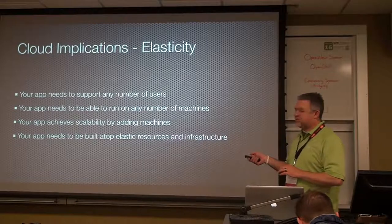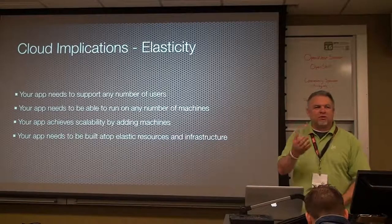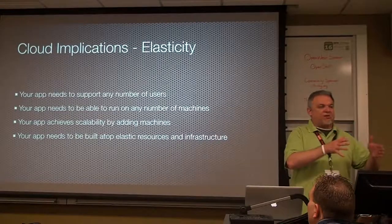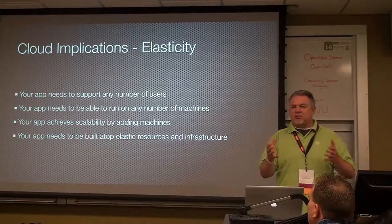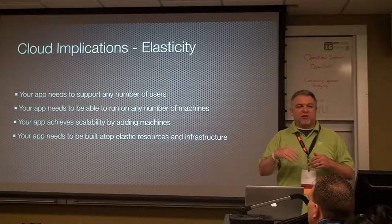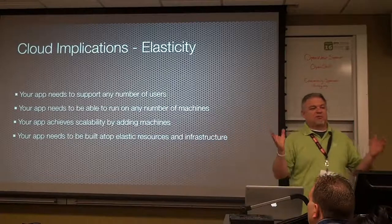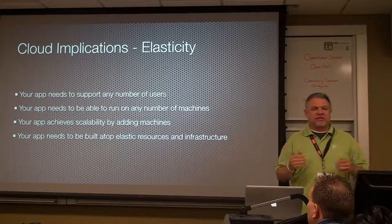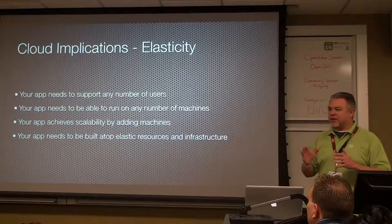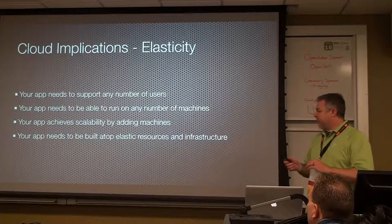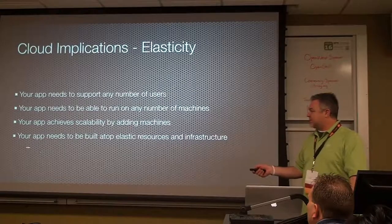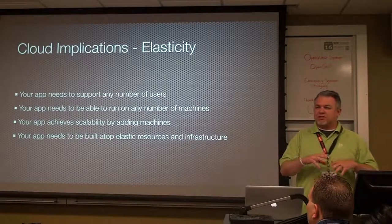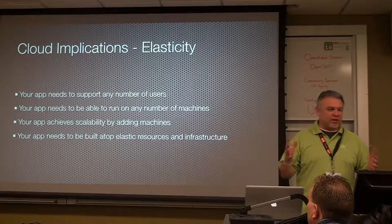That's how you achieve scalability — by adding machines. You don't achieve scalability by optimizing your code, because optimizing your code only gets you so far. If you need to go from 500 to 5,000 users, maybe optimizing your code can get you there. But if you need to go to 50 million users — no amount of optimizing your code is going to get you there. So if you're going to be truly elastic, you've got to scale a different way. It's not just your app that has to be elastic — you've got to be built on top of other resources that support that elasticity too.